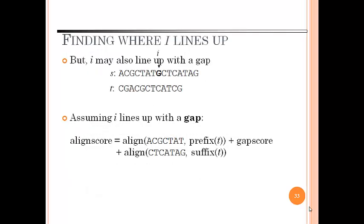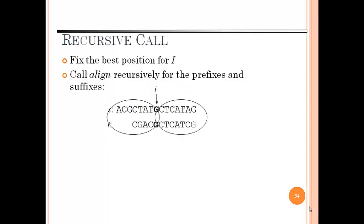But i may also line up with a gap. Assuming i aligns up with a gap, then through the following formula we can calculate the alignment score. For a recursive call, fix the best position for i. Call alignment recursively for the prefixes and the suffixes.